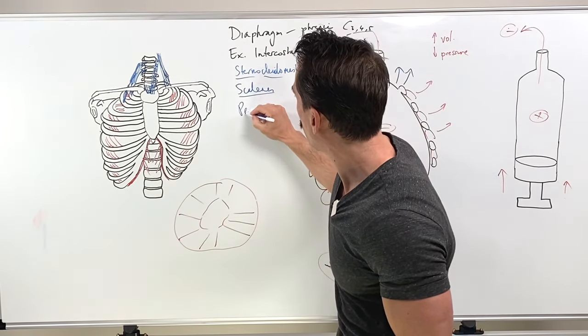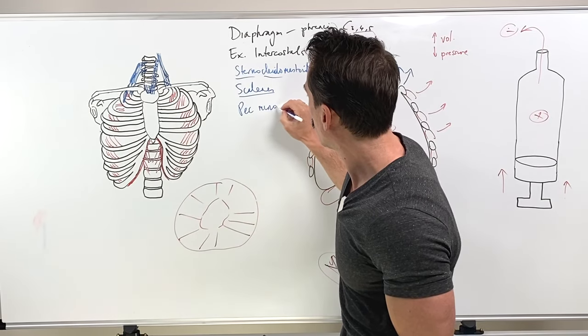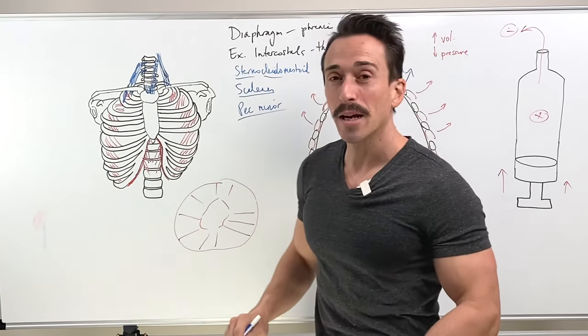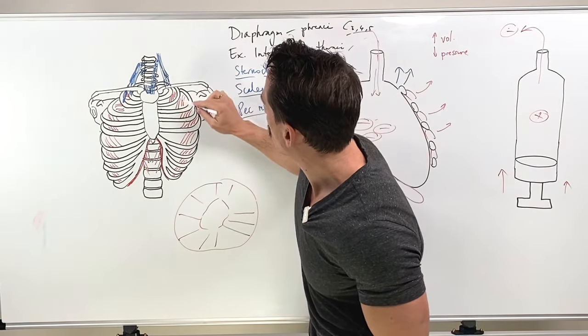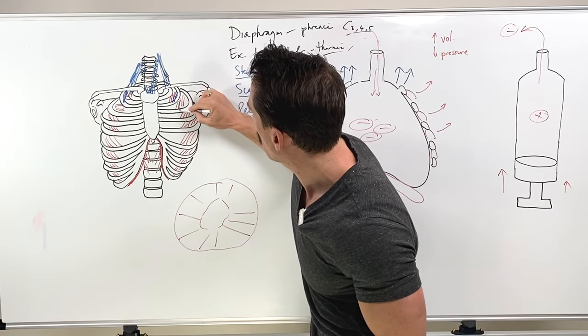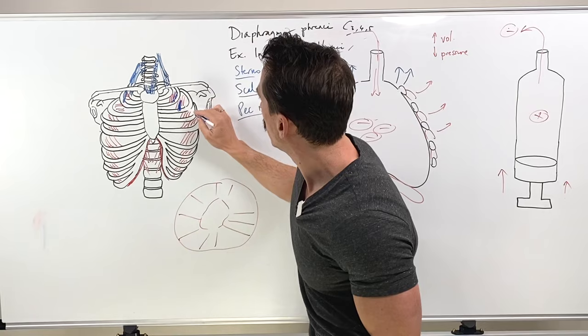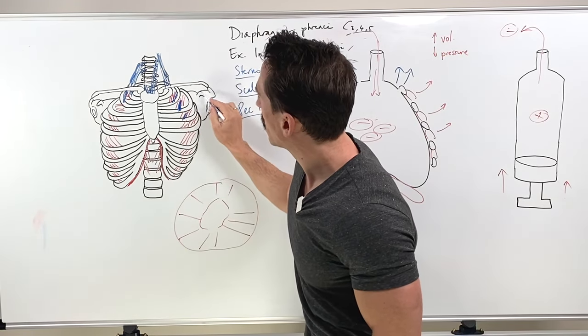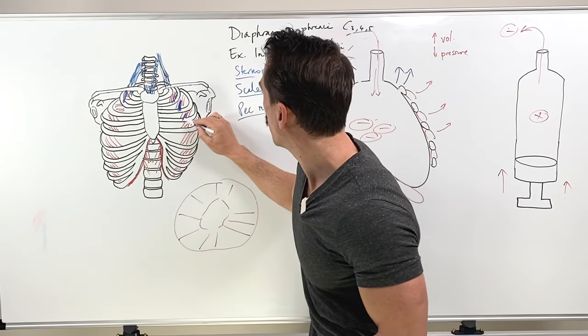What else? What about pec minor? Pec minor has its origins at the ribs here and it inserts at the coracoid process of the scapula.